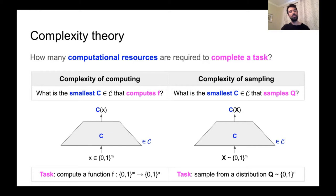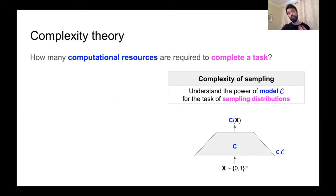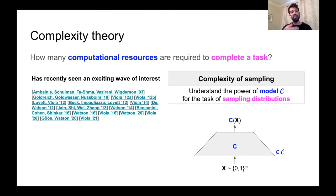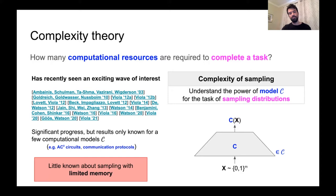Beyond these two specific questions, the complexity of computing and the complexity of sampling are generally interested in understanding the power of various computational models for these tasks. Recently, there have been a lot of really exciting works that further our understanding of the complexity of sampling. However, results are still only known for a few computational models like AC0 circuits and communication protocols, and not much is known about the complexity of sampling with limited memory. In this work, we aim to fill this gap and study the space complexity of sampling.